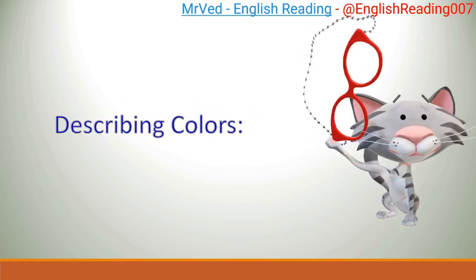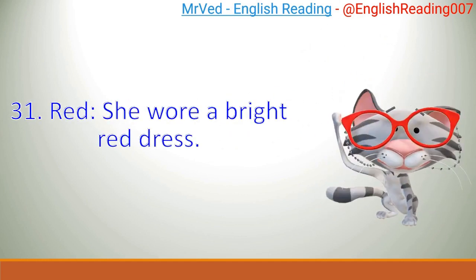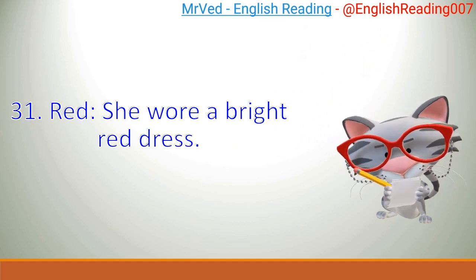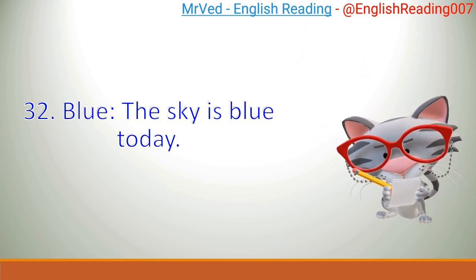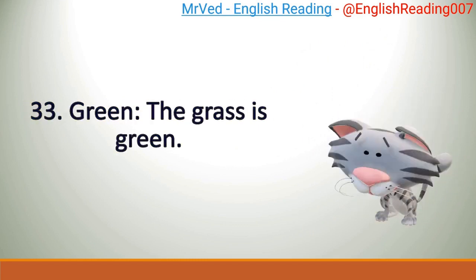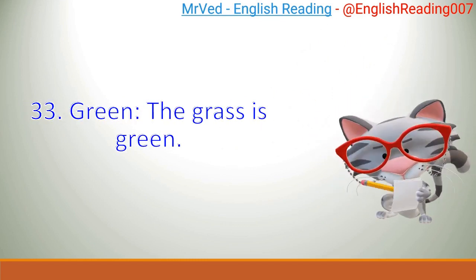Describing Colors. 31. Red. She wore a bright red dress. 32. Blue. The sky is blue today. 33. Green. The grass is green.